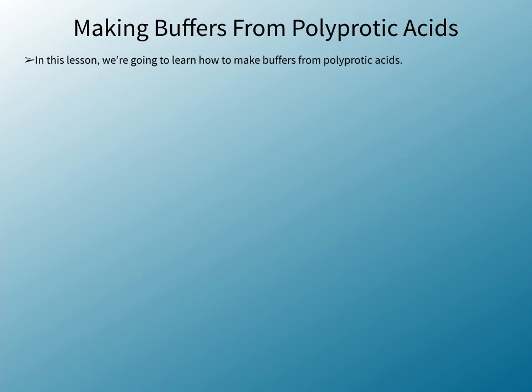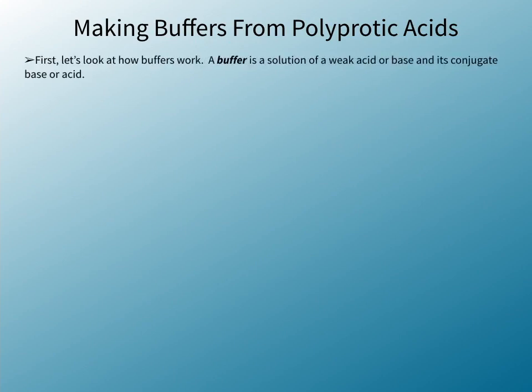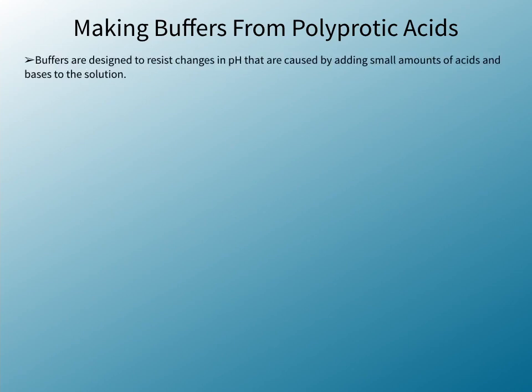In this lesson, we're going to learn how to make buffers from polyprotic acids. First, let's look at how buffers work. A buffer is a solution of a weak acid or base and its conjugate base or acid. Buffers are designed to resist changes in pH that are caused by adding small amounts of acids and bases to the solution.